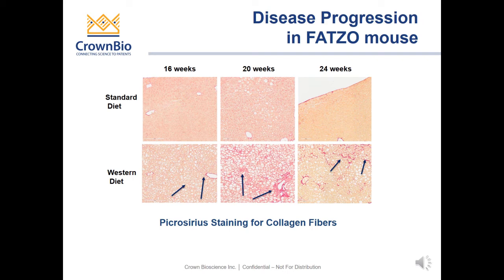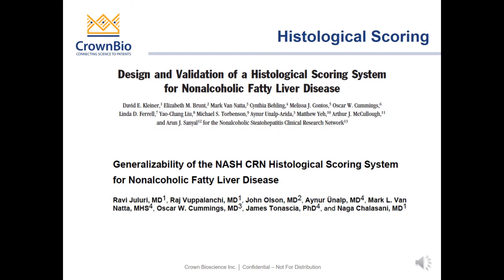When we performed Sirius red staining, we revealed progressive liver fibrosis induced by the high-fat diet during the course of 24 weeks. Liver fibrosis stage was assessed by a pathologist at study end, and quantitative image analysis of collagen from Sirius red staining was performed. You can see the fibrous band formation indicated by the arrows. In performing the histological scoring, we refer to publications by Kleiner et al. and Juluri et al. in order to quantitate the non-alcoholic steatohepatitis scoring.